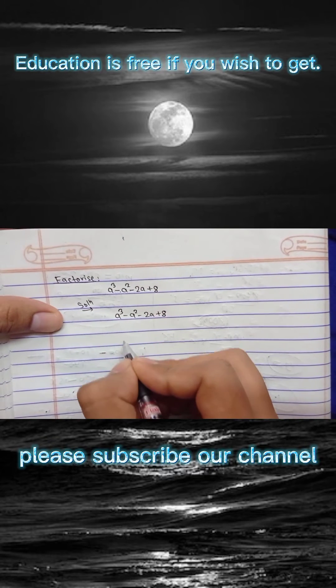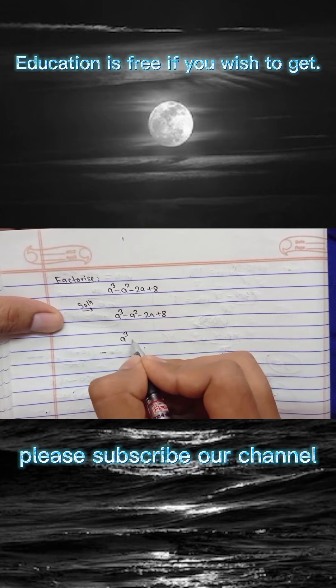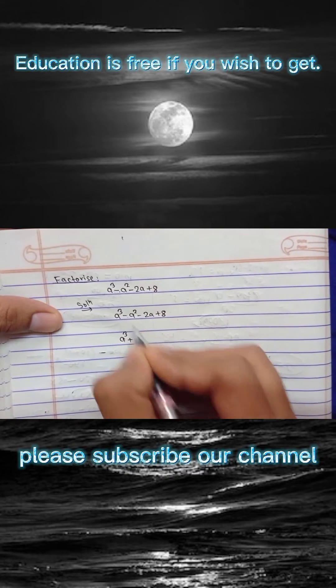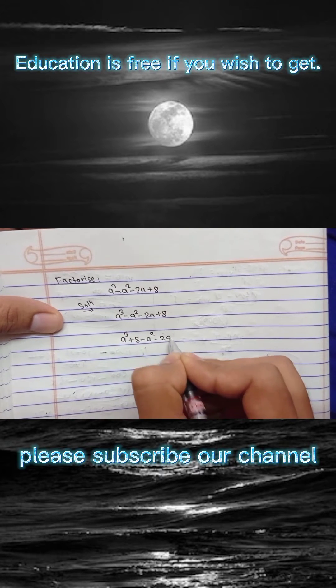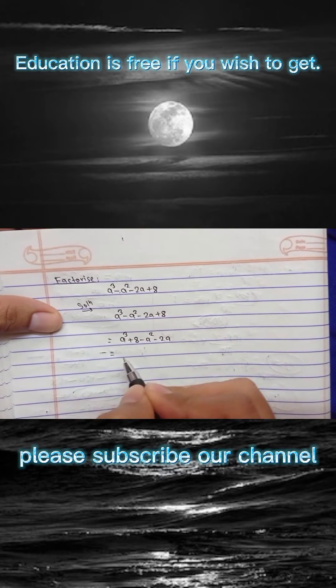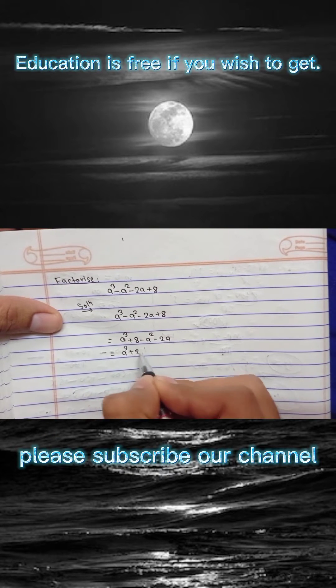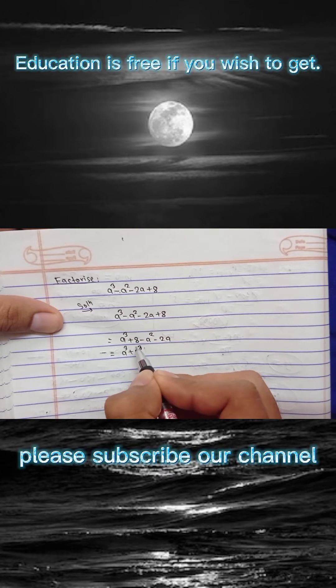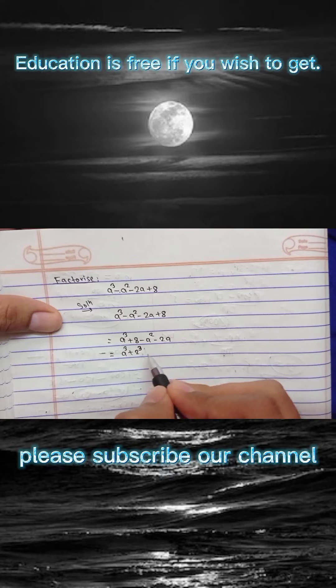Here you can see this is a³ and you write this plus 8 here and this minus a² and minus 2a here. And if you arrange this 8 as 2³ because 2³ is 8, so I write here 2³ in place of 8.